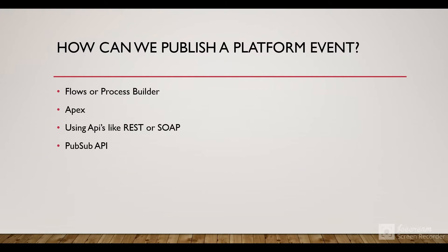How can we publish a platform event? We can publish using flows or process builders, using Apex, using APIs like REST, and lastly the Pub/Sub API, which is the latest addition. Using flows and process builder we can publish through UI without manual code. With Apex we have the EventBus.publish() method. With REST API we make a POST request to the URL: /services/{platform_event_name}.